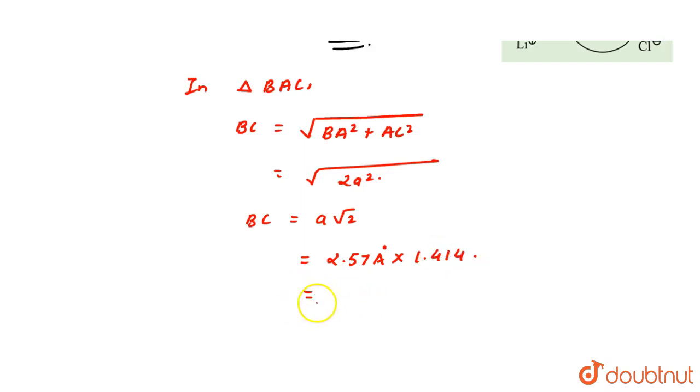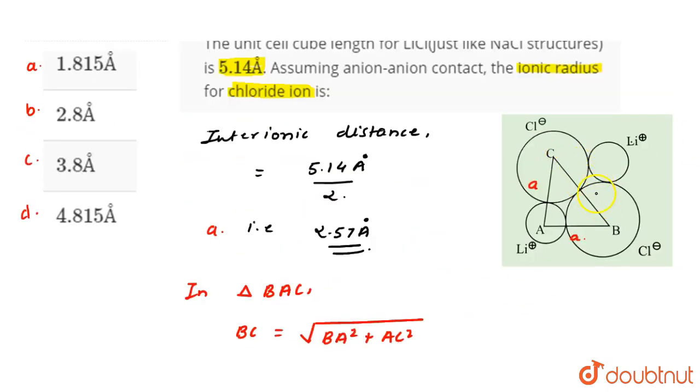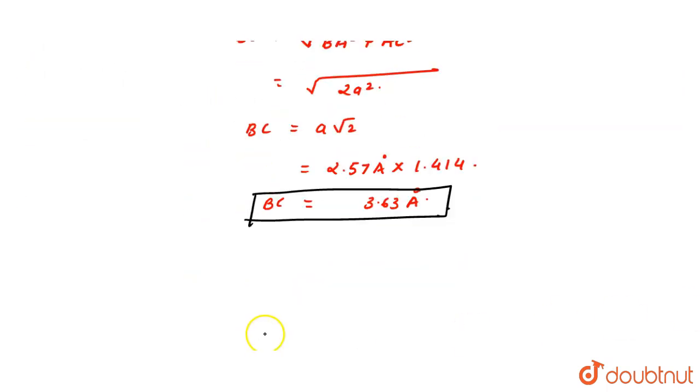And which equals 3.63 angstrom. So now we have done one part, that is BC's length. Now if I look at the question, this is BC's length, we have to take the ionic radius of chloride. So basically if we see here, BC's length we will halve it, so I will get the radius which is chloride, because this is our chloride ion.